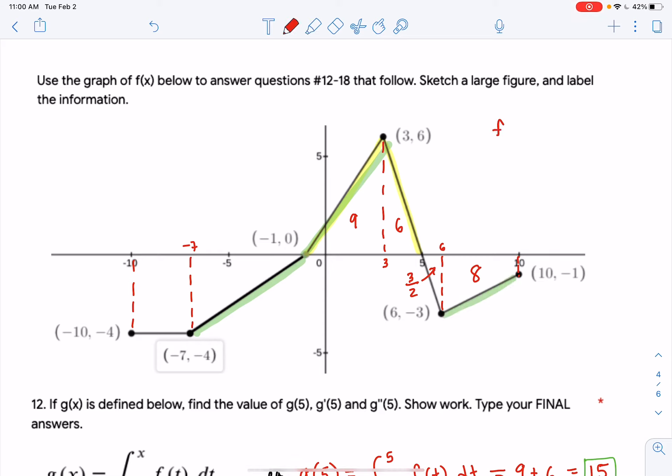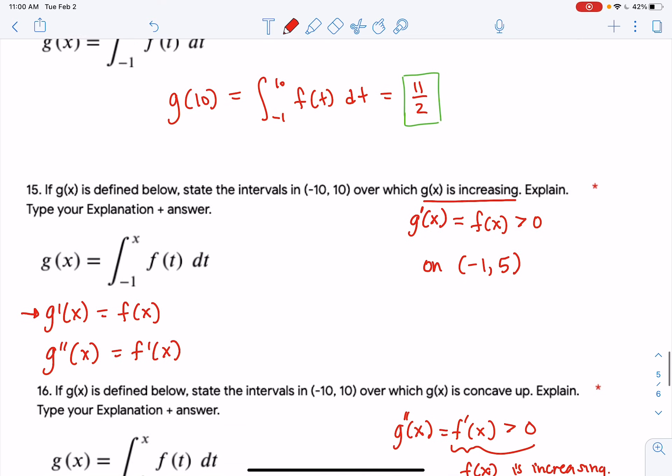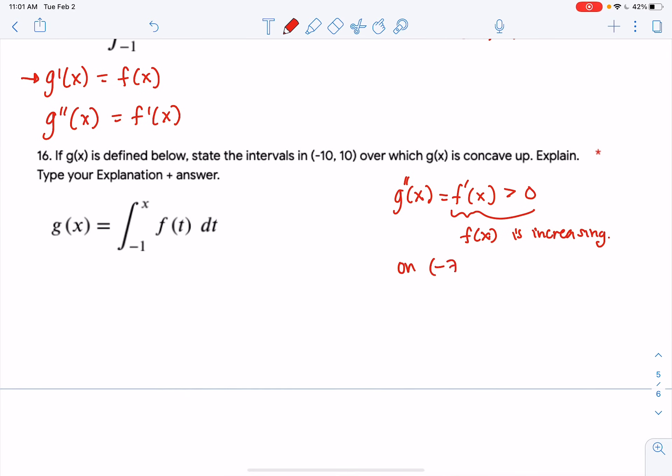That's where f is increasing. It's also where f prime is greater than 0, meaning we have a positive slope. Indeed, this is our positive slope everywhere in green. So we'll say from negative 7 to 3 and then 6 to 10. And we are done.